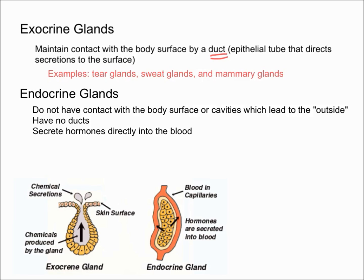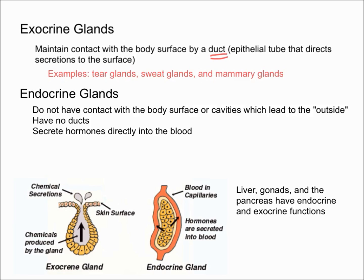Finally, some organs actually have both properties — they have properties of both endocrine and exocrine glands. For example, your liver, gonads, and the pancreas all have both endocrine and exocrine functions.